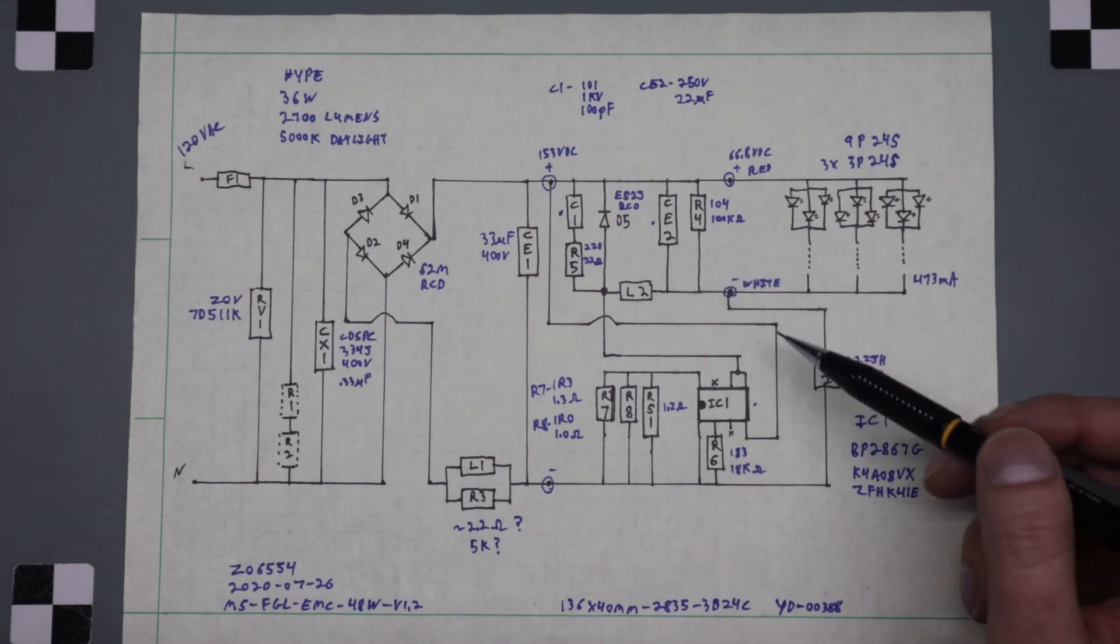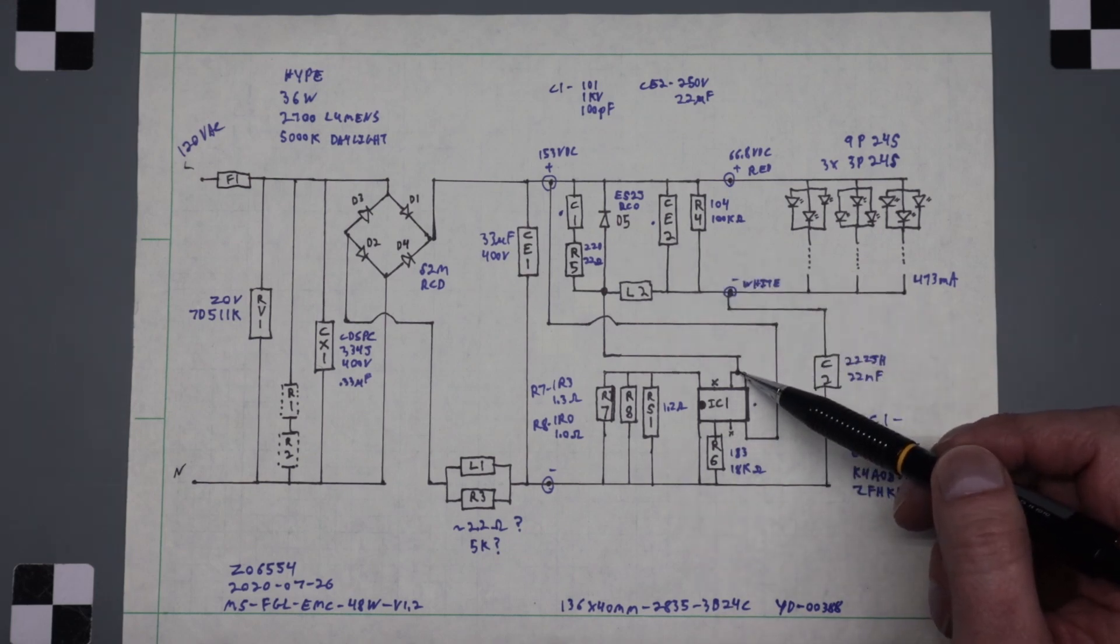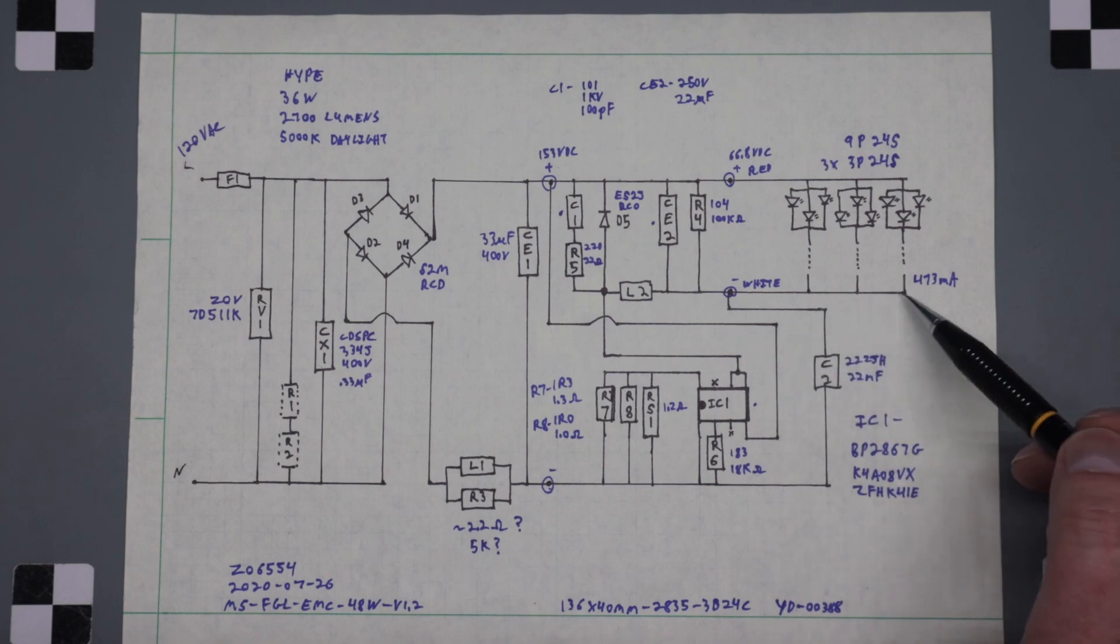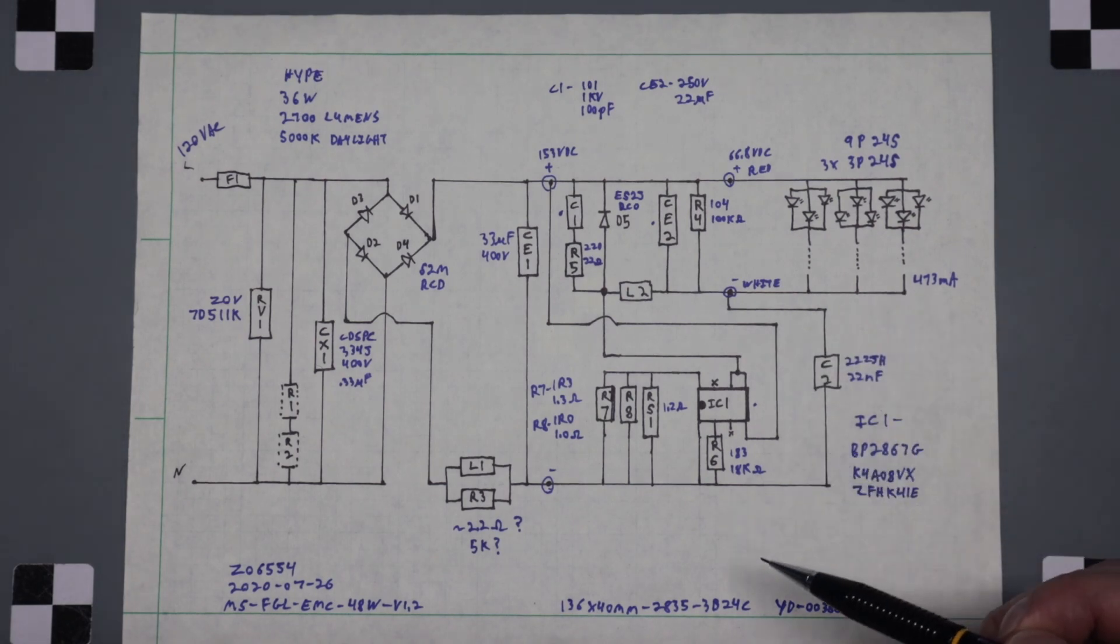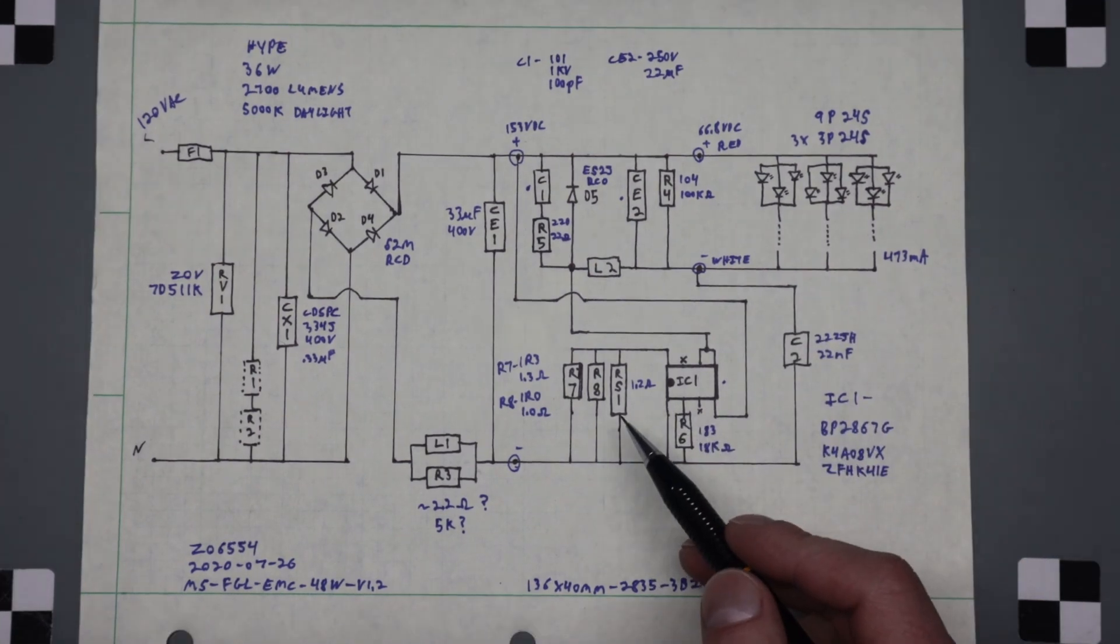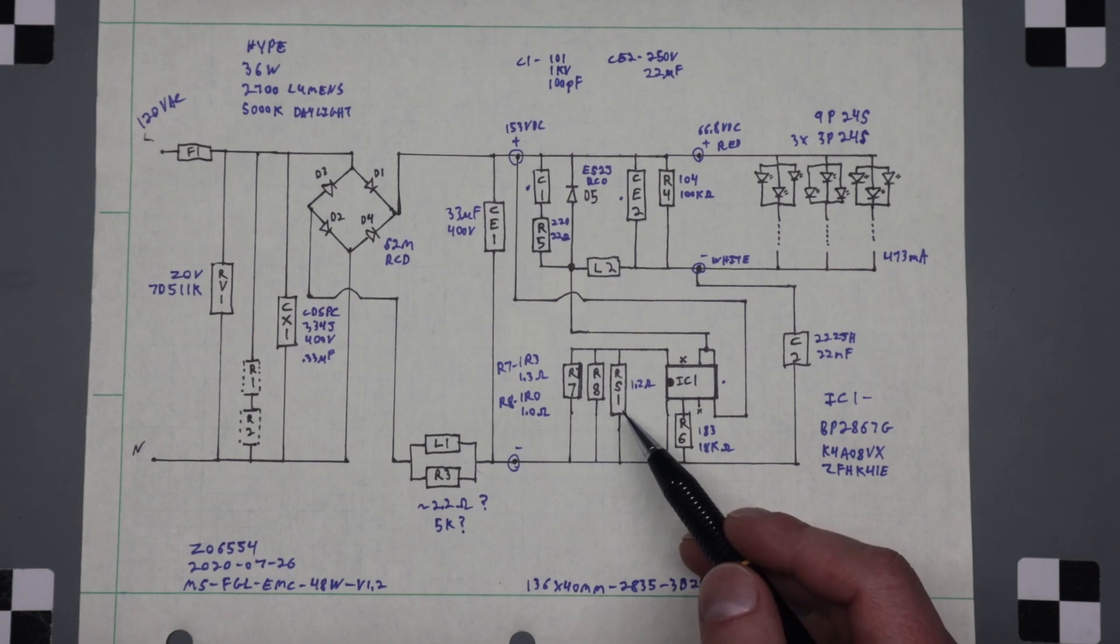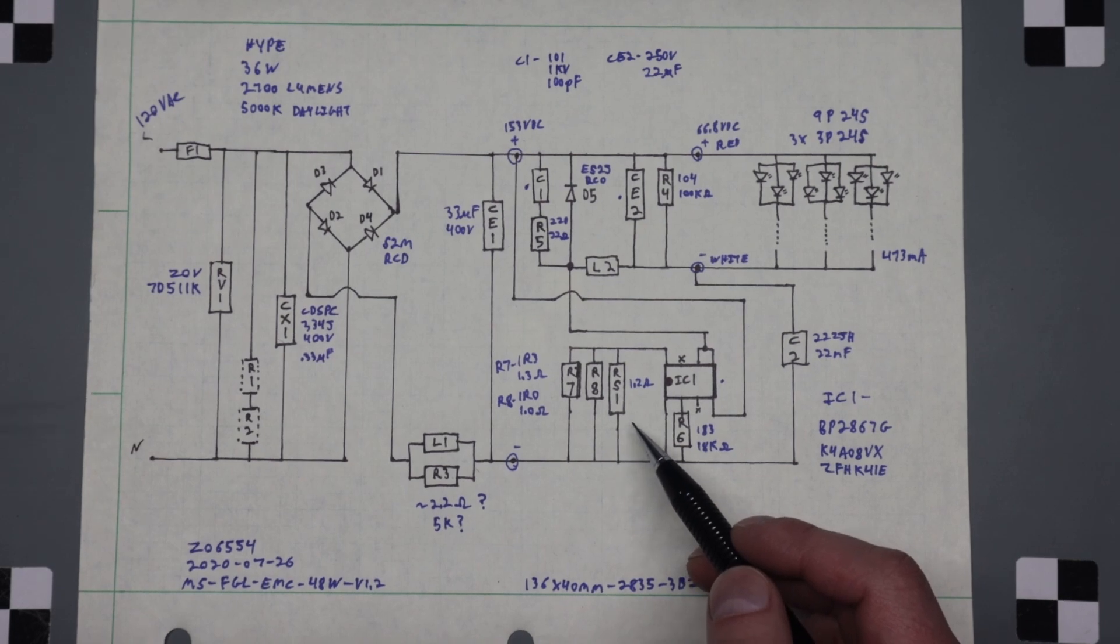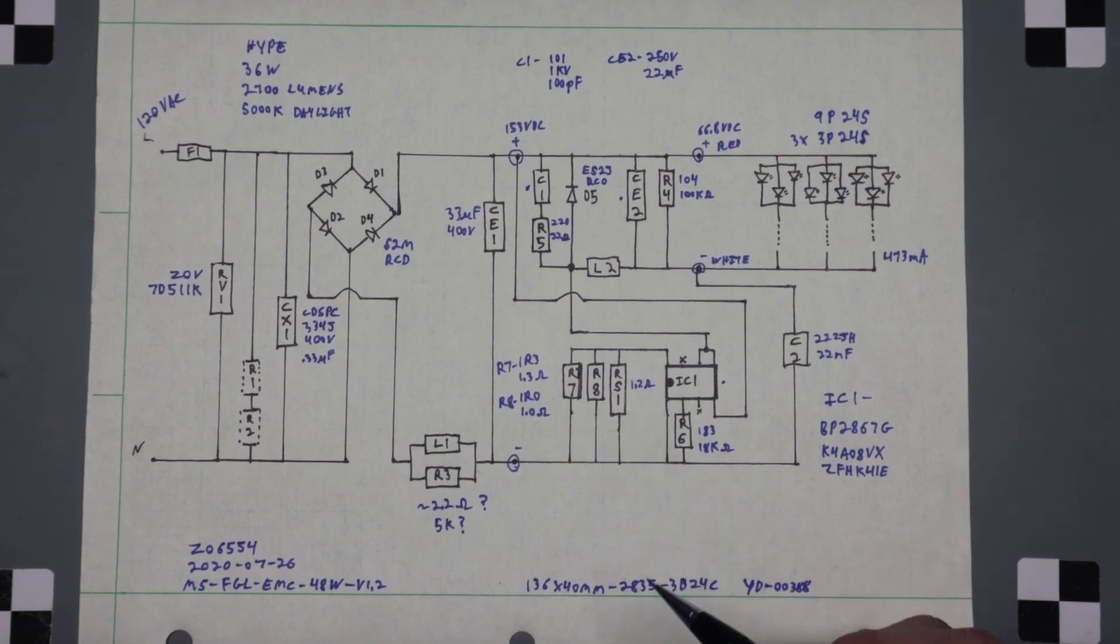One is controlling the current going into the LEDs. So because the colors are so horrible on blue, it's hard to tell whether some of these things are maroon or brown or what. But this particular one was brown, red, black, silver, brown. So I believe that was 1.2 ohms.